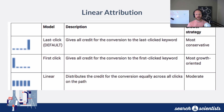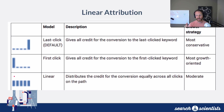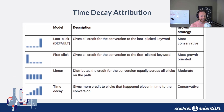In order to start addressing this issue, they've developed things like linear attribution, which basically takes that one conversion and divides it up between all the different clicks that someone actually took. So if someone clicks on that cold traffic ad first, then they see a dynamic retargeting ad, it will split it up between both of them, giving credit to both. So if there's just one conversion, it'll divide it up in half.